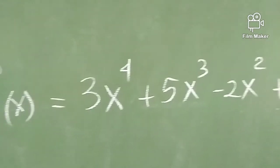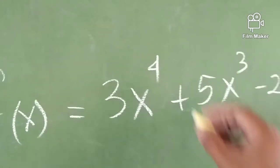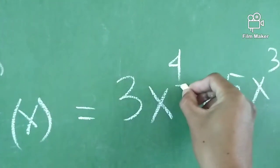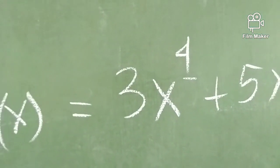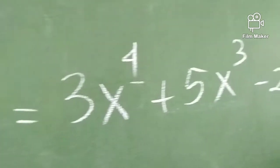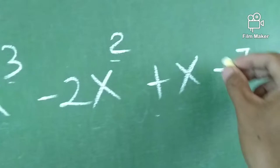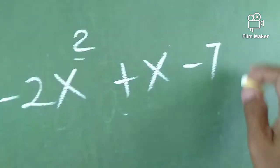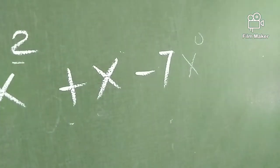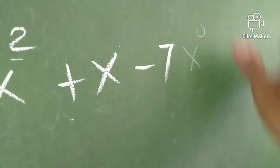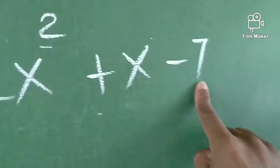What do we call descending form? The descending form means we start with the term that has the highest exponent, which is 4. In this given polynomial function, the next is 3, 2, 1, and then x raised to 0. But we don't show x raised to 0 anymore — rather, that becomes a constant term, negative 7.